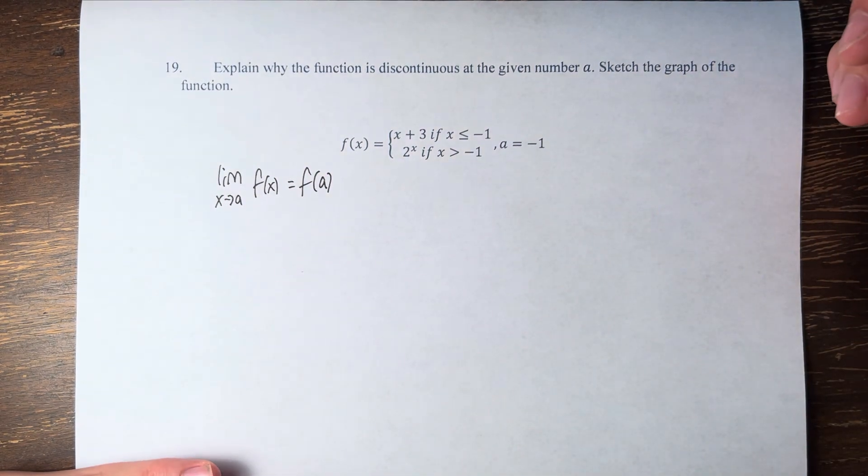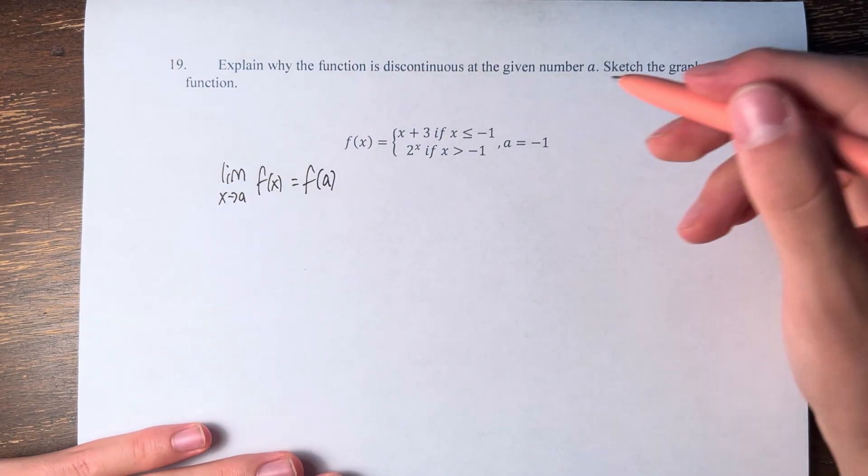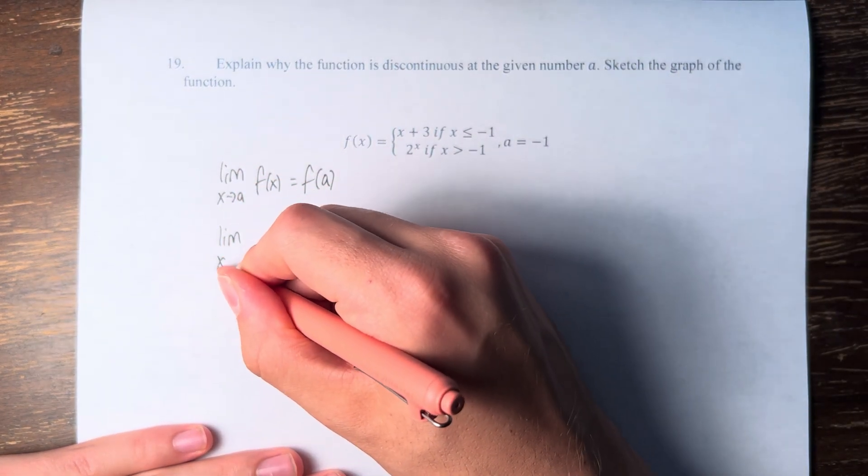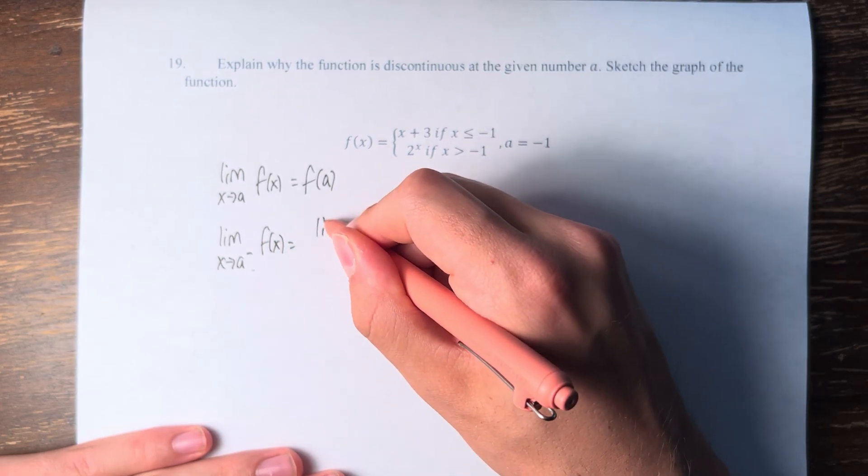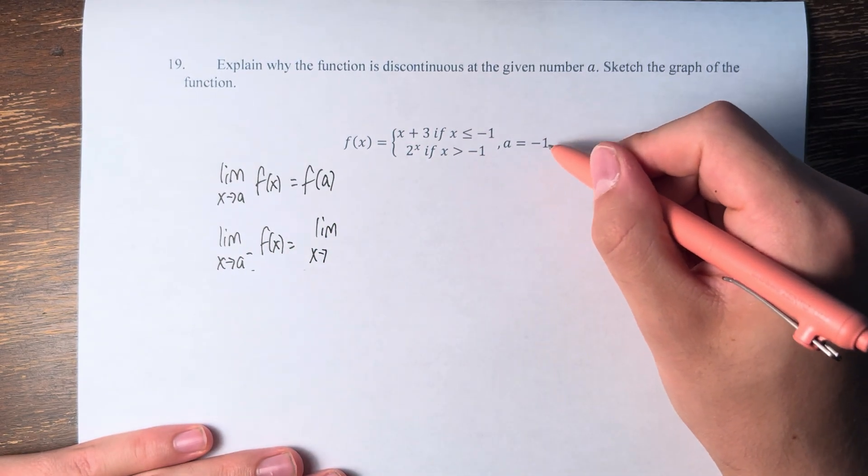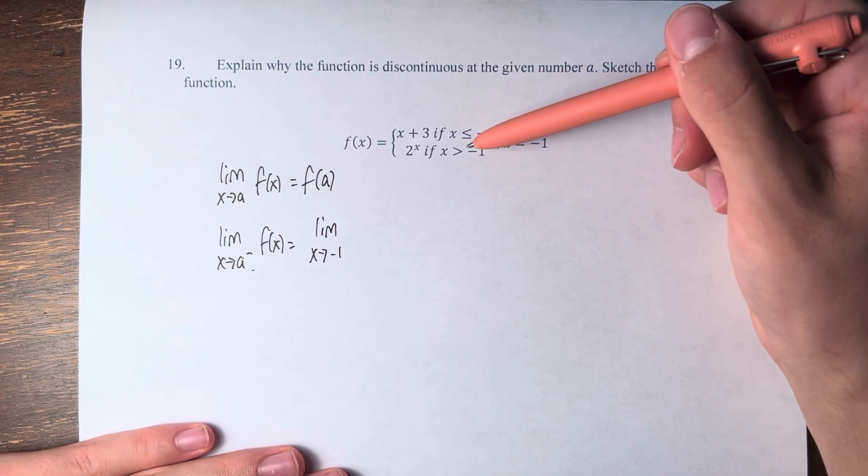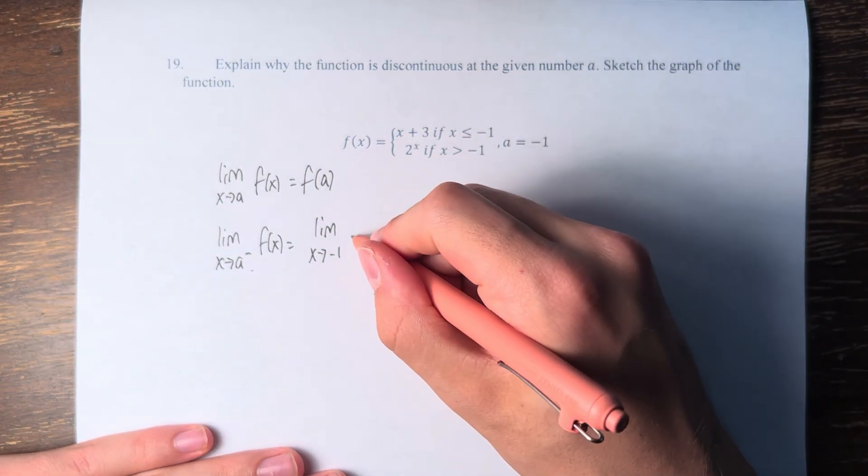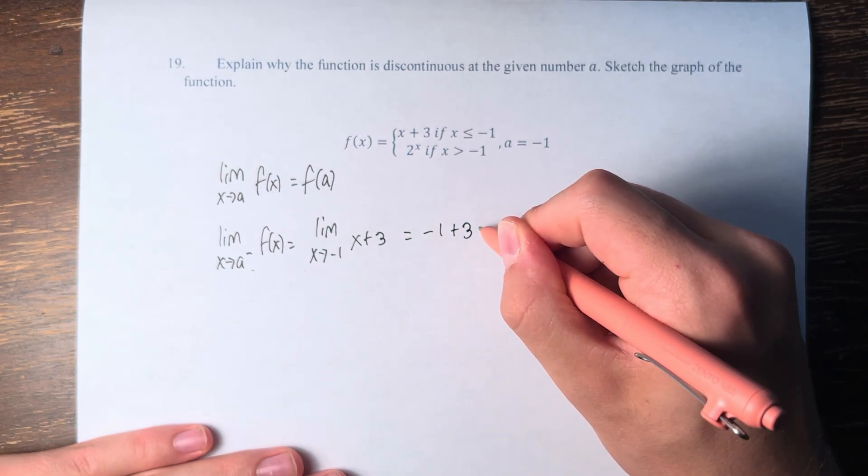First of all, let's take the limit as x approaches a. If we have the limit as x approaches a from the left of f of x, that's the limit as x approaches negative 1 for values that are less than negative 1, which means we're using x plus 3. We can just plug it in, negative 1 plus 3, which is 2.